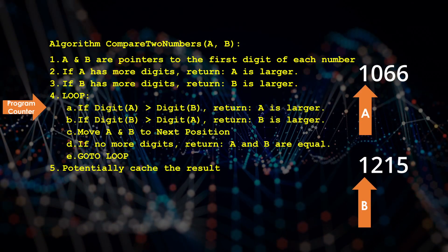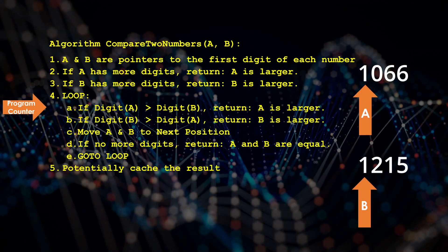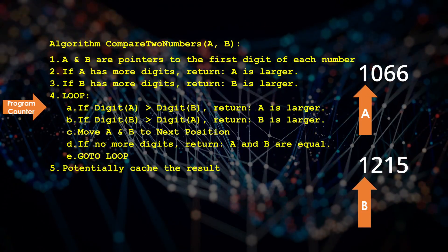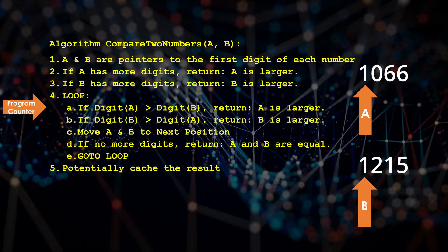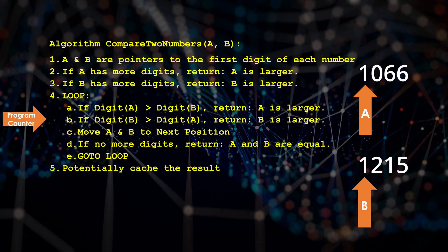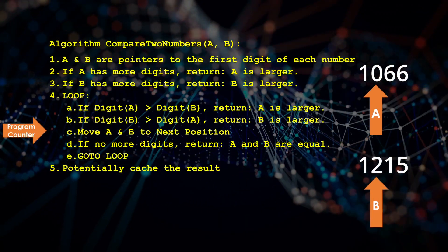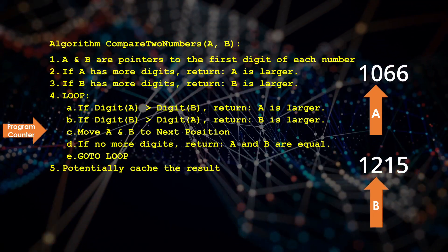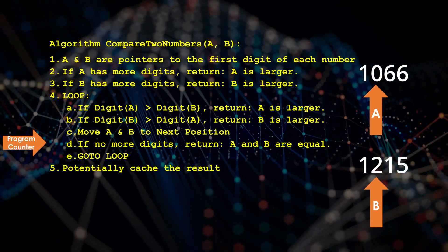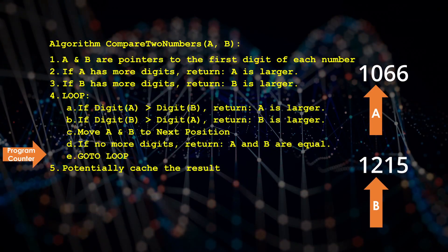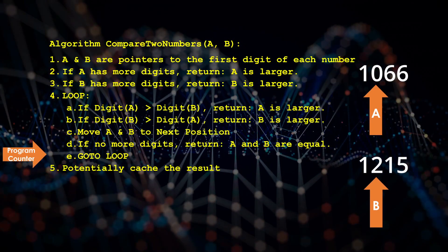Now we enter a loop. If the digit pointed to by A is greater than the digit pointed to by B, then return that A is larger, or the other way around. Then move the A and B pointers to the next digit positions. And if there are no more digits, return that A and B are equal. In the case we are looking at, there are more digits, so we go back to the beginning of the loop.